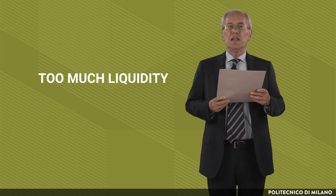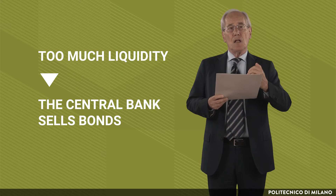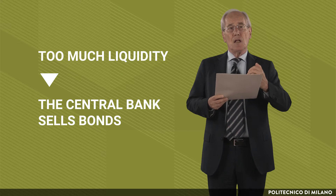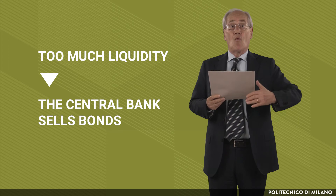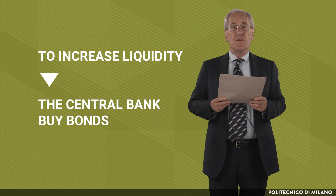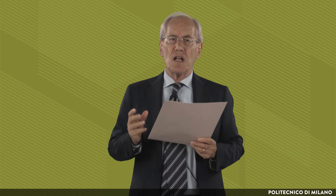The other tool is open market operations. When the governing body of the central bank feels that there is too much liquidity in the economy — interest rates are too low, the economy is growing too fast — they can withdraw liquidity from the banking system in exchange for bonds. So the central bank injects bonds into the banking system and sucks away liquidity. On the other hand, when there is too little liquidity, the central bank buys bonds from the banks, paying with liquidity. These are extremely powerful tools.